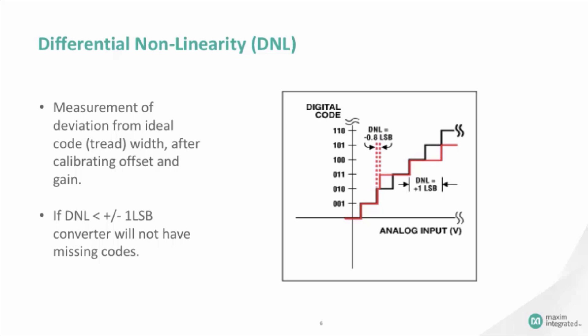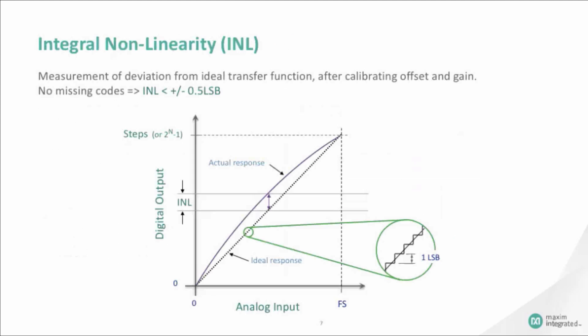Integral non-linearity is the accumulation of all DNL errors. It is the maximum deviation from the ideal slope of the ADC. The error is described in number of LSBs or percentage of full-scale range. There are two common references from which to measure the INL deviation, the best-fit straight line and the endpoint INL.